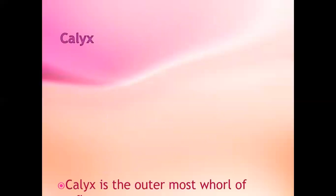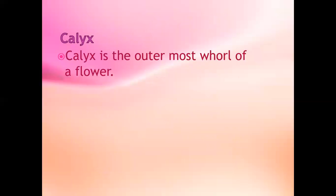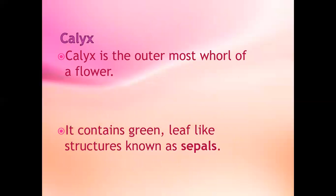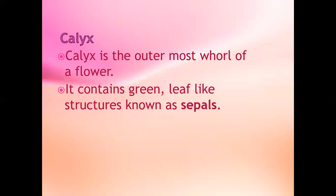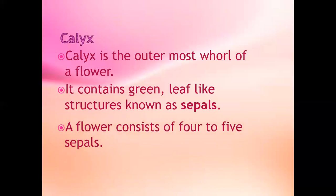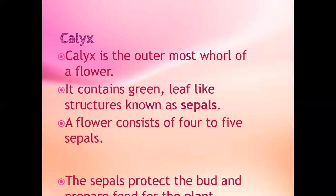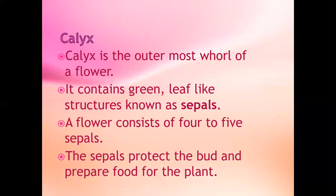Calyx. Calyx is the outermost wall of a flower. It contains green leaf-like structures known as sepals. A flower consists of four to five sepals. The sepals protect the bud and prepare food for the plant.